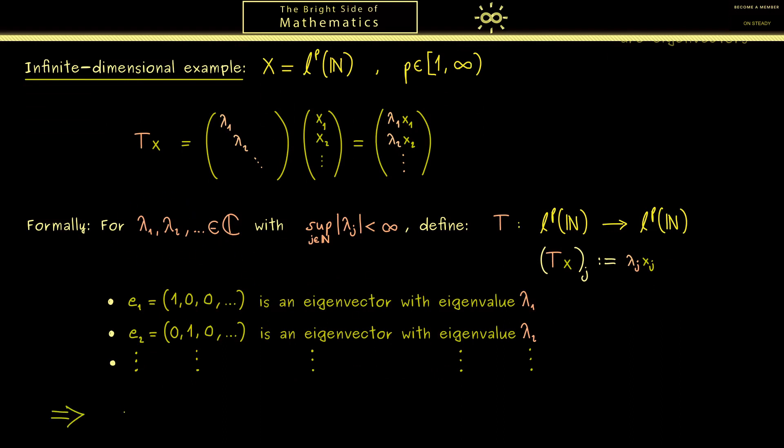Therefore we have shown now that all these lambdas lie in the spectrum of T. In other words at least we have a subset relation here. On the other hand we immediately see any other complex number can't be an eigenvalue of T. Therefore this set is indeed the point spectrum of T.